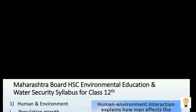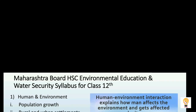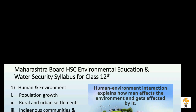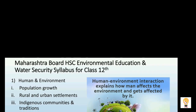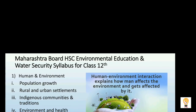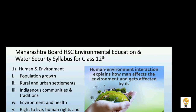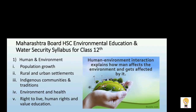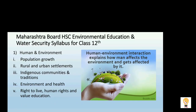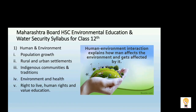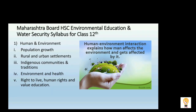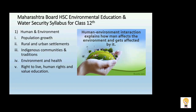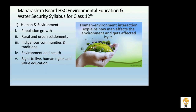The syllabus consists of five chapters. The first is human and environment, which has subtopics: population growth, rural and urban settlements, indigenous communities and traditions, environment and health, right to live, human rights and value education. In our further coming videos, we are going to talk about all the subtopics and chapters in detail.